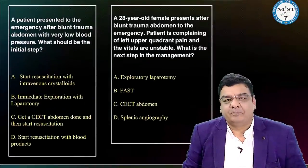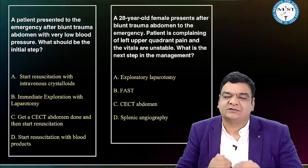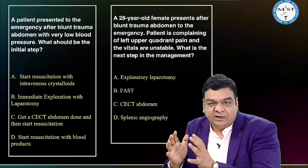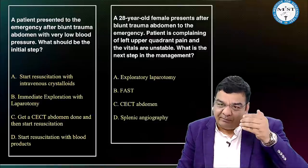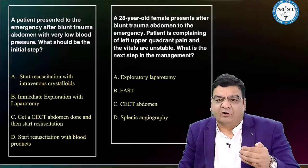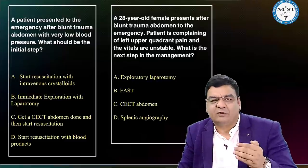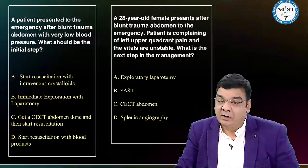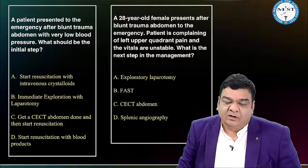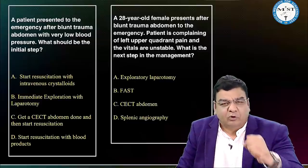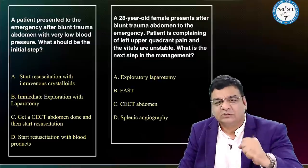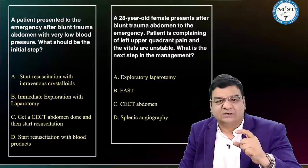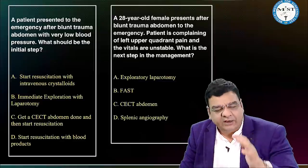Another hot area is the table regarding management of blunt trauma abdomen. They may give a clinical situation asking whether the patient is hemodynamically stable or unstable. If stable, admit under observation, perform FAST, but best information comes from CECT. Treatment for stable patients is mostly conservative and non-operative. If the examiner gives an unstable scenario, first save the life — in any emergency clinical scenario across all subjects, you must save the life first.